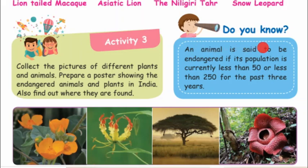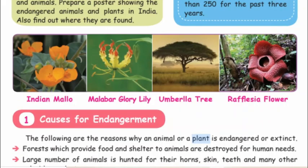An animal is said to be endangered if its population is currently less than 50, or less than 250 for the past 3 years. Endangered plants shown here include Indian mallow, Malabar glory lily, umbrella tree, and rafflesia flower.